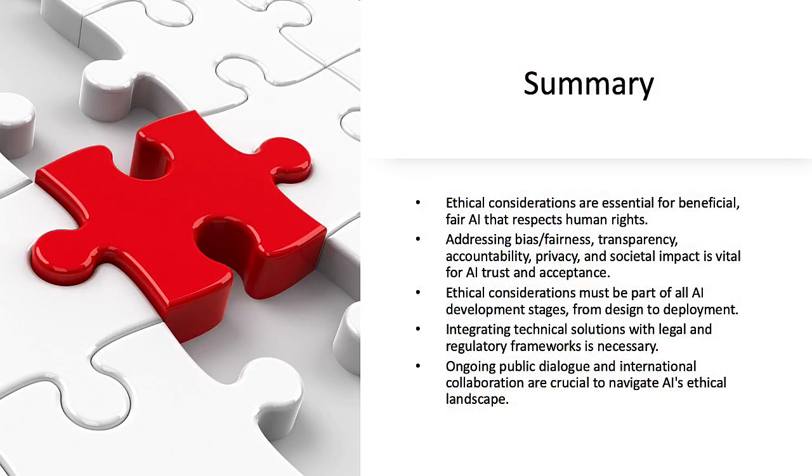In summary, ethical considerations in AI development are crucial to ensure that AI technologies are used in a way that is beneficial, fair, and respects human rights. Addressing issues such as bias, fairness, transparency, accountability, privacy, and the societal impact of AI is essential for building trust and acceptance of AI systems. As the field of AI continues to evolve, ethical considerations must be integrated into every stage of AI development, from design to deployment. This includes not only technical solutions, but also robust legal and regulatory frameworks, ongoing public dialogue, and international collaboration to navigate the complex ethical landscape of AI.